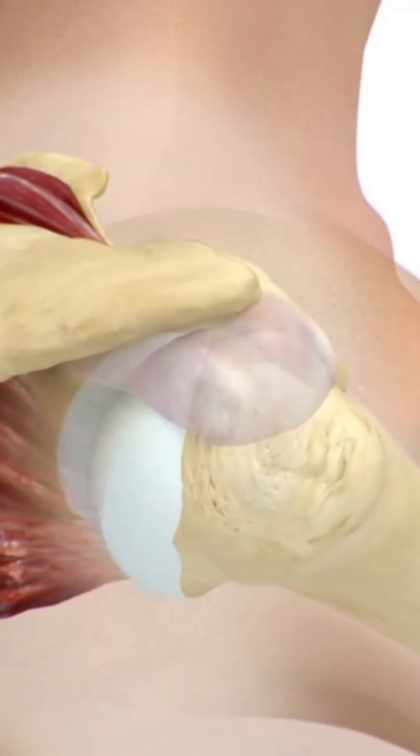1. Impingement Syndrome and Bursitis. In cases of impingement syndrome and bursitis, ultrasound can clearly observe the swelling of the bursa and fluid accumulation. Ultrasound images directly show the swelling of the bursa, allowing for accurate diagnosis and effective treatment planning. Additionally, precise injection therapy under ultrasound guidance enhances the accuracy and safety of the treatment.